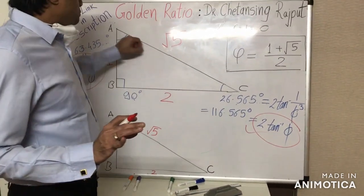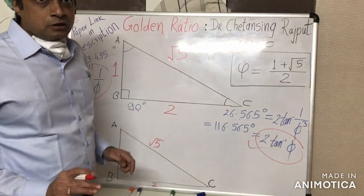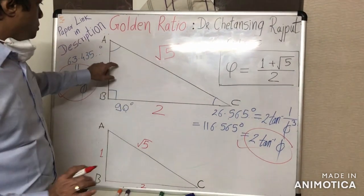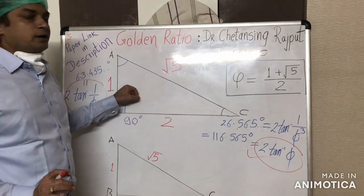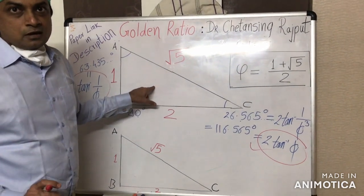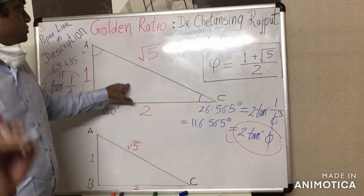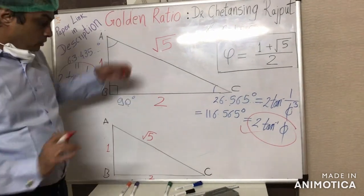Moreover, not just sides and not just angles, every geometric aspect of this 1 to root 5 triangle, every geometric aspect of this special right triangle is simply the purest expression of golden ratio.